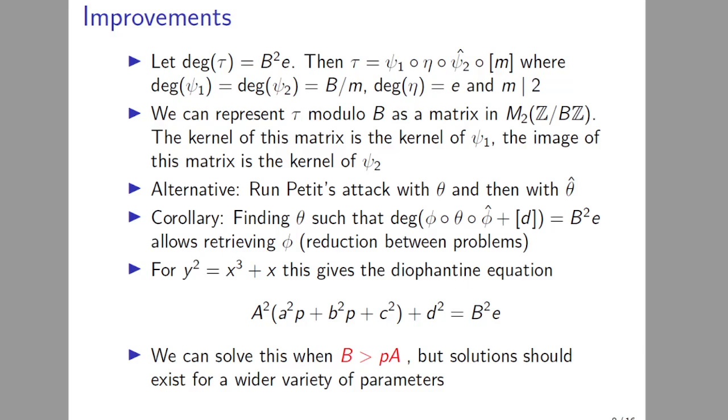Another way of thinking about this attack is actually a reduction from finding a suitable θ with a suitable degree to the SSI-T problem. So when the starting curve is y^2 = x^3 + x, we have a very similar Diophantine equation to the previous one, except now we have B^2 instead of B. And we can solve this whenever B is bigger than p·A with the exact same method as before. But solutions should exist for a much wider variety of parameters; we just weren't able to find them. We give heuristics on when this should be solvable, but solving them is left as an open problem.